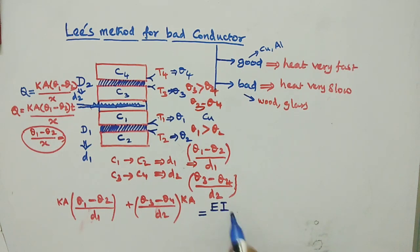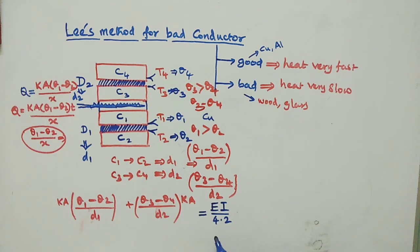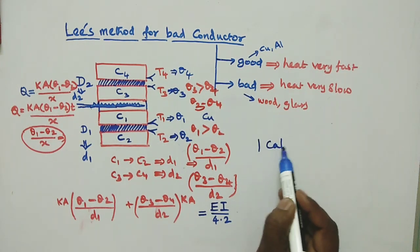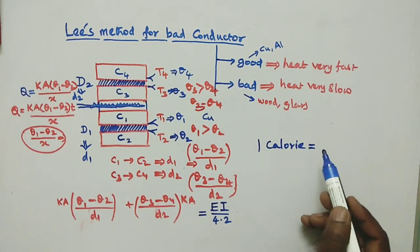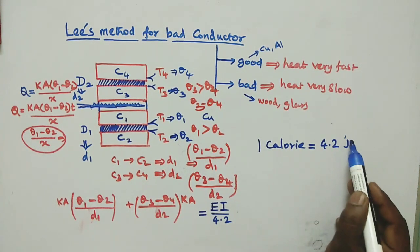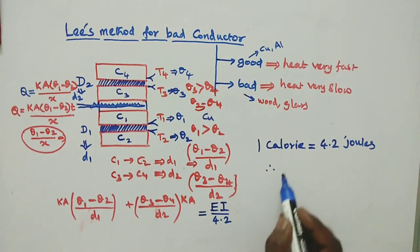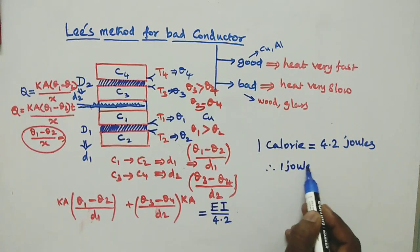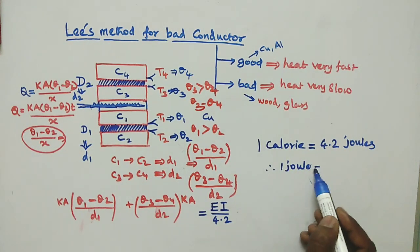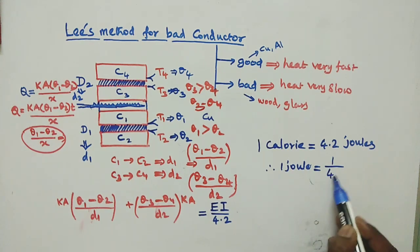The heat from the coil equals E times I divided by 4.2, where 4.2 is the conversion factor because 1 calorie is equal to 4.2 joules. Therefore, 1 joule is equal to 1 divided by 4.2 calories.